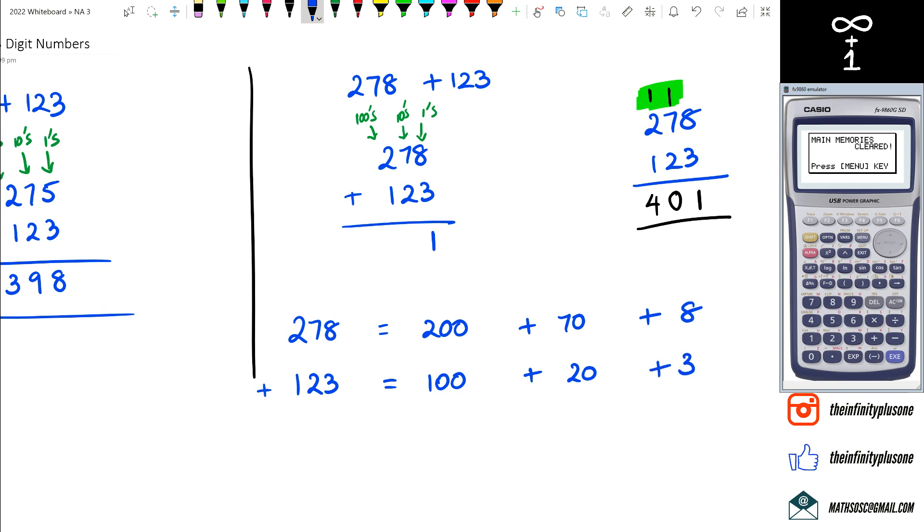Now because we're adding these two numbers, I'm going to be adding the numbers in a different way. So think about it like this: I'm going to add 200 and 100 to get 300, 70 and 20 when I add those I'm going to get 90, and then 8 and 3 when I add 8 and 3 I'm actually going to get 11.